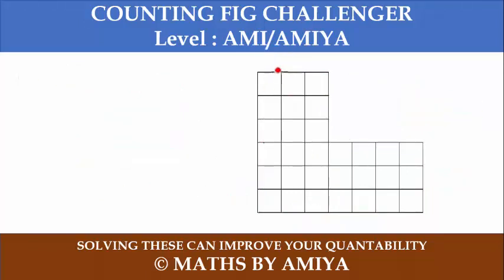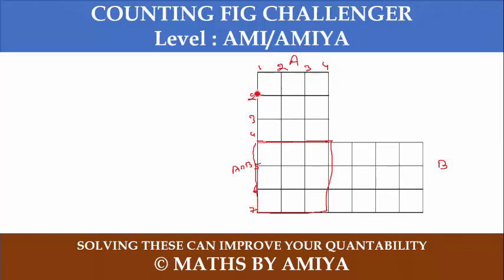Now solving this question: we have section A, section B, and the overlap case. For section A, we have four vertical lines and seven horizontal lines. So the number of rectangles in section A is 4C2 into 7C2.